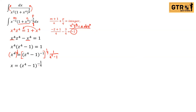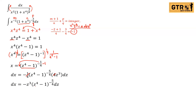Next, find dx. Using the power rule: bring down the exponent negative 1/4, subtract 1 to get negative 5/4, then multiply by the derivative of (z to the 4th minus 1), which is 4z cubed dz. Simplifying — the 4 and 1/4 cancel — gives dx equals negative z cubed times (z to the 4th minus 1) raised to negative 5/4 dz.